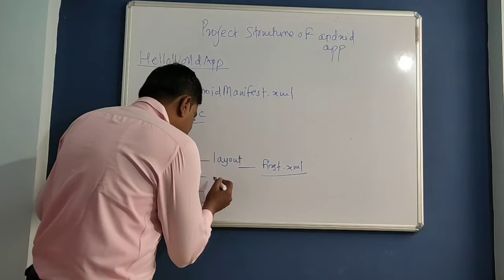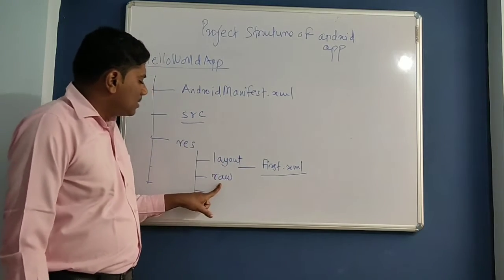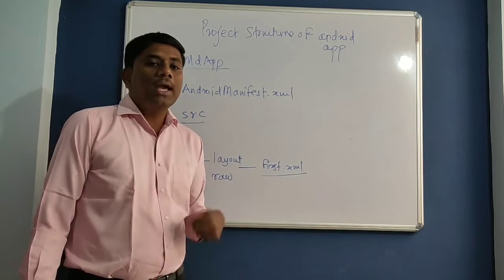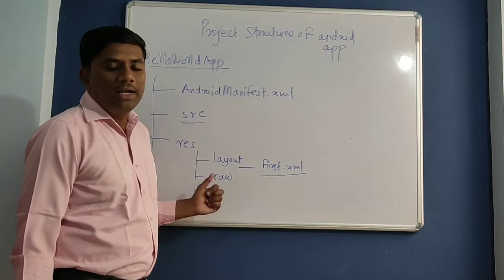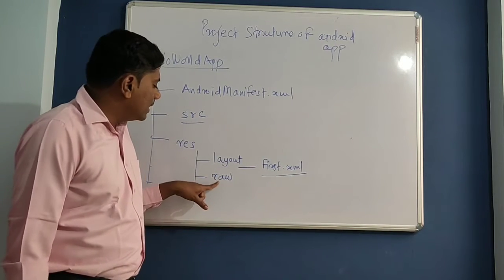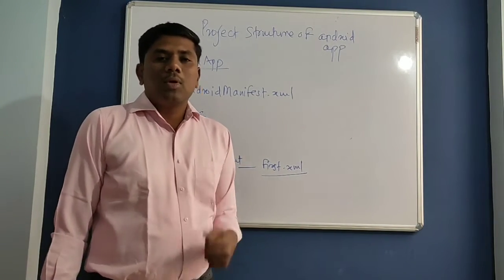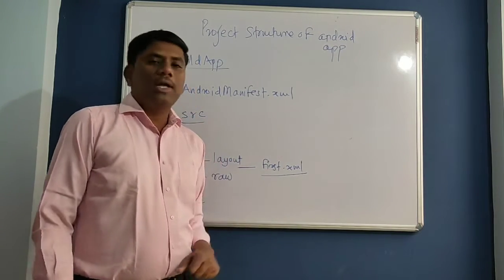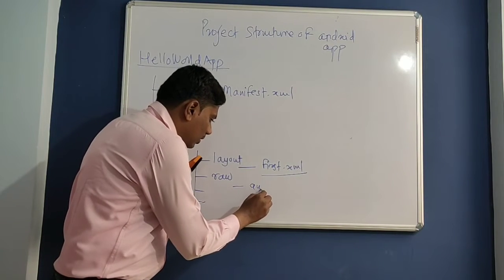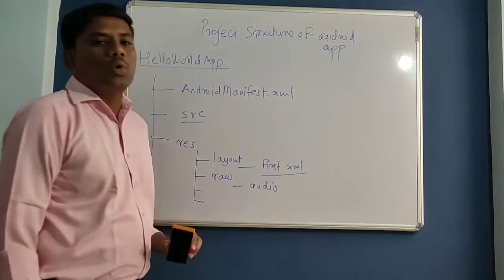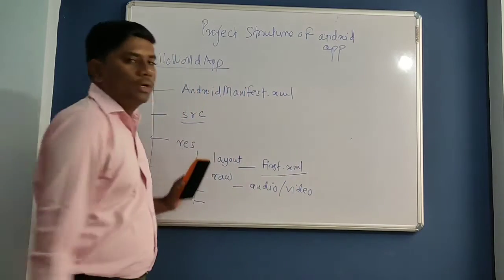Next is the raw folder. This is not created by default — you can create it after creating the application. If you want to use some audio or videos in your Android application, you can store those audio and video files in the raw folder.